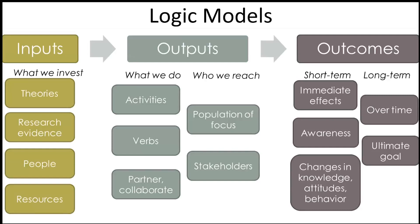I have here a very basic template of a logic model that we use across a few of our projects. We have the inputs — the things we invest. We have the outputs — our activities, the things that we do, and who we reach with those activities. We have our population of focus and stakeholders involved in our projects and programs. And then, through those things, we are trying to achieve our outcomes. We have short-term outcomes that are often changes in knowledge, attitudes, and behavior, and then longer-term outcomes that we see over time.